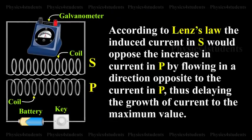According to Lenz's law, the induced current in S would oppose the increase in current in P by flowing in a direction opposite to the current in P, thus delaying the growth of current to the maximum value.